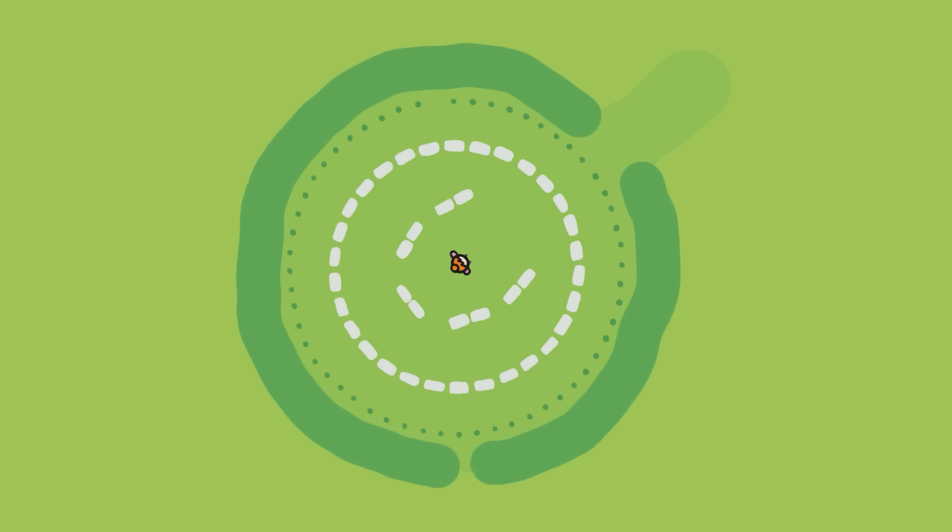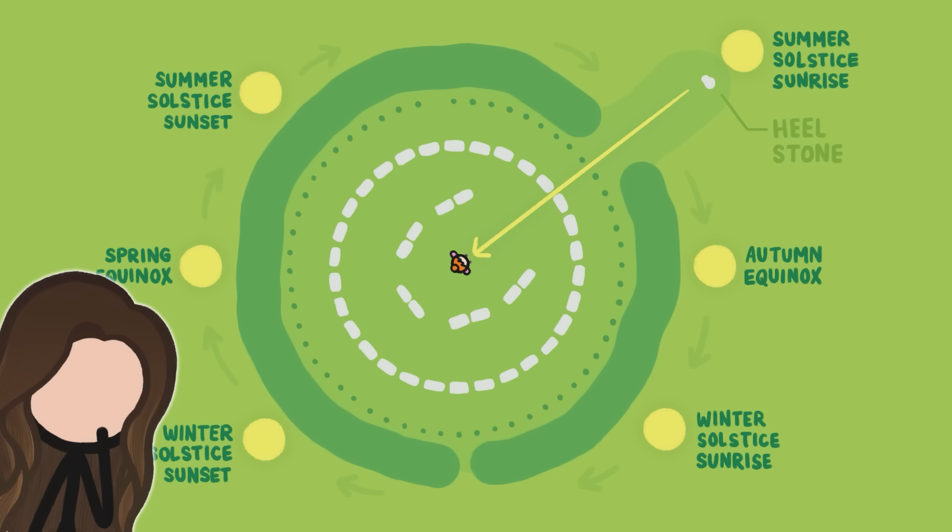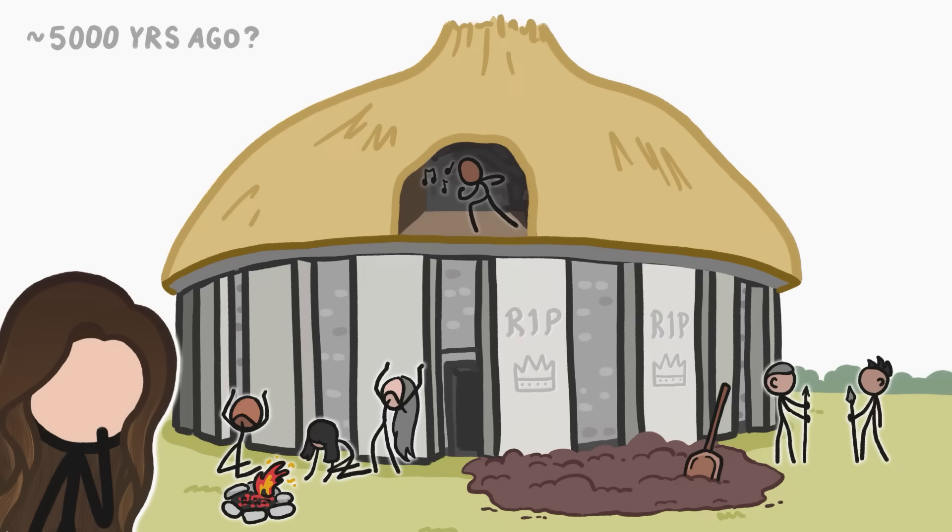One enduring theory suggests that Stonehenge was basically used as a giant calendar. For instance, if you're standing in the center of the rings on the first day of summer, the sun seems to rise behind a particular stone called the heel stone, meaning that people probably use Stonehenge to track the passing of the seasons. But that seems like a lot of work to just make the world's biggest sundial. Perhaps the true purpose of Stonehenge has been lost to the thing we think it tracked. Time.